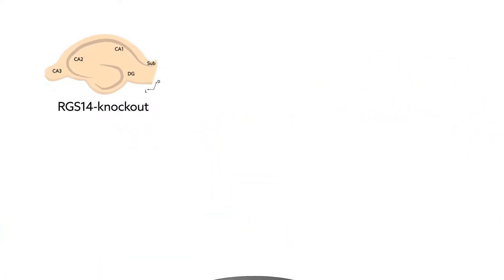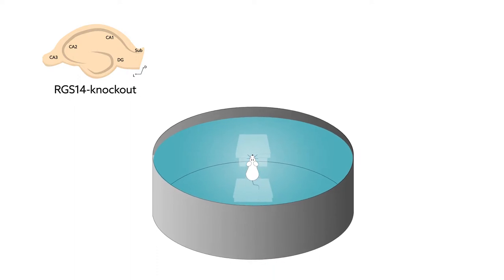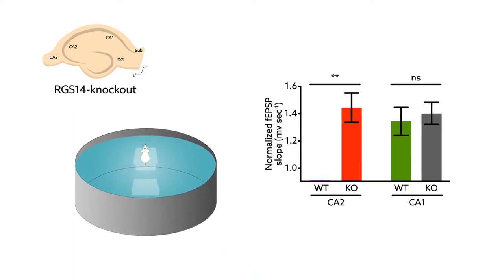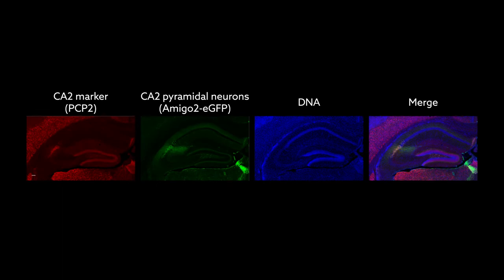Intriguingly, mice lacking RGS14 show enhancements in learning and memory and possess unusual CA2 plasticity, which is normally absent in wild-type mice. The mice were crossed with a reporter line that fluorescently labels CA2 neurons to help localize synapses onto these cells for physiology studies.